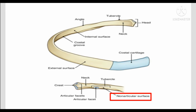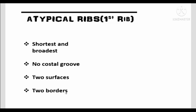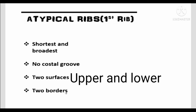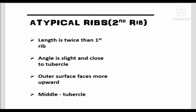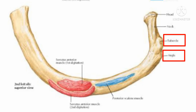First atypical rib: it is the shortest and the broadest, with no costal groove. It has two surfaces — upper and lower — and two borders — inner and outer.